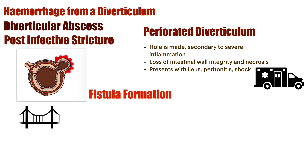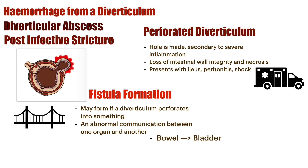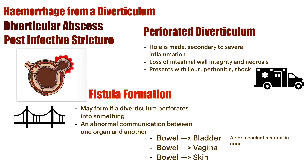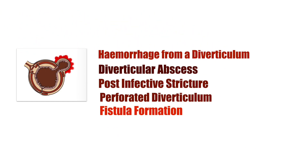You can also develop a fistula — an abnormal communication between one organ and another. A fistula may form if a diverticulum perforates into a nearby organ. The organs close to the bowel include the bladder, the vagina, and the overlying skin. It presents with air or fecal material in the urine if it's into the bladder, fecal material in the vagina, or fecal discharge through a wound in the skin.